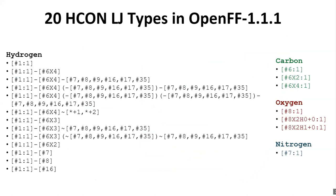If we look at Lennard-Jones atom types in a recent Open Force Field release, it turns out there are 20 for the elements hydrogen, carbon, oxygen, and nitrogen. There are actually a number of types for hydrogen and fewer types for carbon, oxygen, and only one for nitrogen. For hydrogen, there's a default string so all hydrogens match, but if the hydrogen is bound to an sp3 carbon, it'll be assigned specialized parameters. If that carbon is bound to one, two, or even three electronegative elements, it'll be assigned further specialized parameters, and so on down the list.